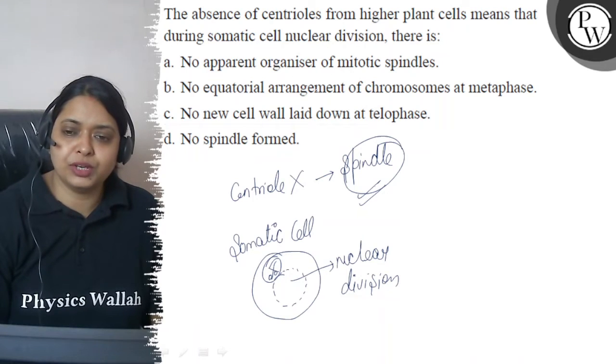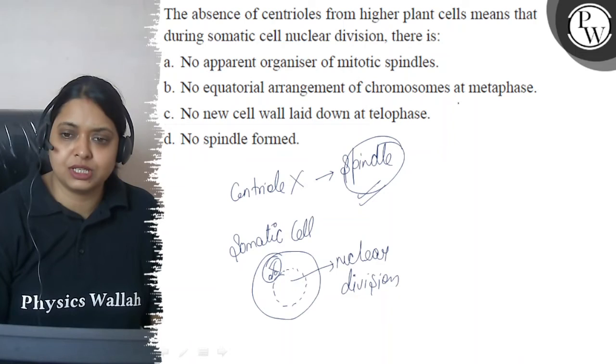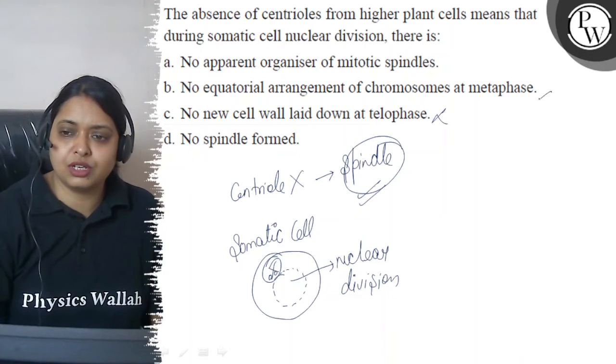B. No equatorial arrangement of chromosomes at metaphase. It will not be like this, because it will be equatorial arrangement. C option: No new cell wall laid down at telophase. This is also wrong, because this is not controlled by centrioles. So this is also not the answer.